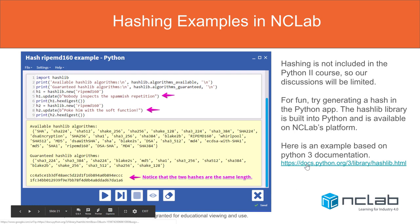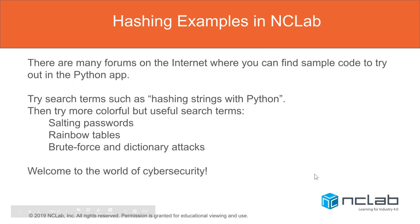The documentation for hashlib is at python.org — try working with Python 3. There are many forums on the internet where you can find sample code to try out in the Python app; just search 'hashing strings with Python' and you'll find all kinds of neat ways to make your data more secure. A common method is salting passwords with random numbers. There are also rainbow tables used to hack codes, and different ways of attacking codes such as brute force and dictionary attacks — and now you're starting to explore the world of cybersecurity.